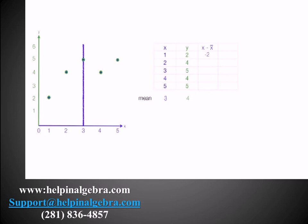The next point is 2 minus 3, the mean of 3, which is negative 1. The next observation happens to be right on the mean. So it's 3 minus 3, which is 0. Now I have 4 minus 3, which is 1. And finally, 5 minus 3, which is 2.